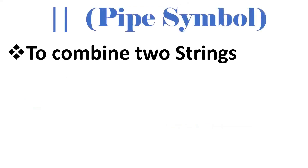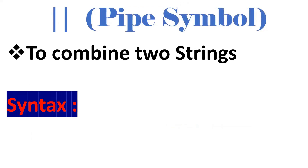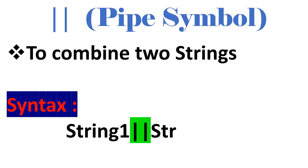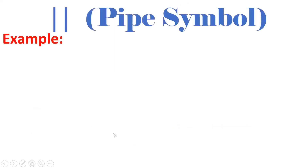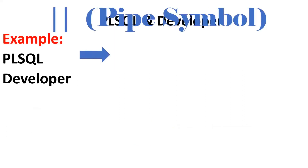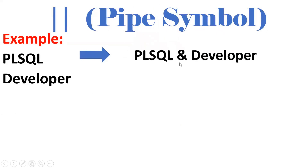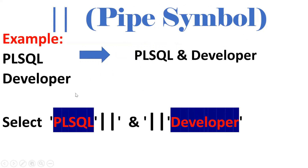The pipe symbol is used to combine two strings. If I want to club two or more strings, we should go for either the pipe symbol or the CONCAT operator. Syntax: string1 || string2. For example, to combine 'PLS' and 'developer' with an ampersand in between: 'PLS' || '&' || 'developer'. This concatenates into a single string.